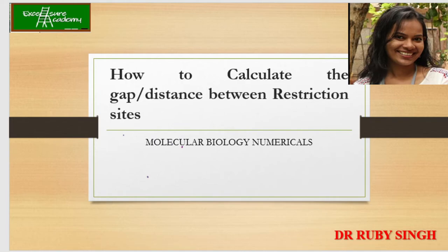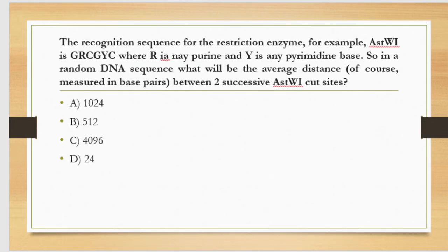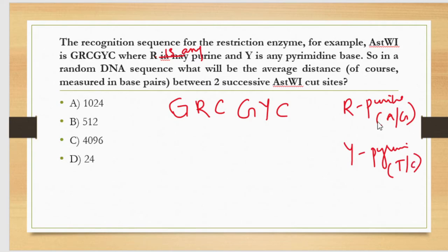Suppose a restriction site is given. Now they're asking: in a given sequence, what would be the gap or distance between the two restriction sites? The question is: the recognition sequence of the restriction enzyme, for example AsuWI, is GRCGYC. Where R is any purine, and Y is any pyrimidine.